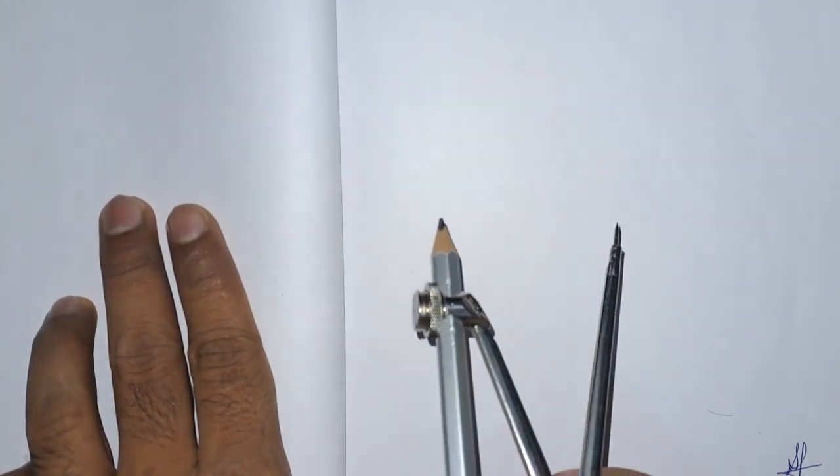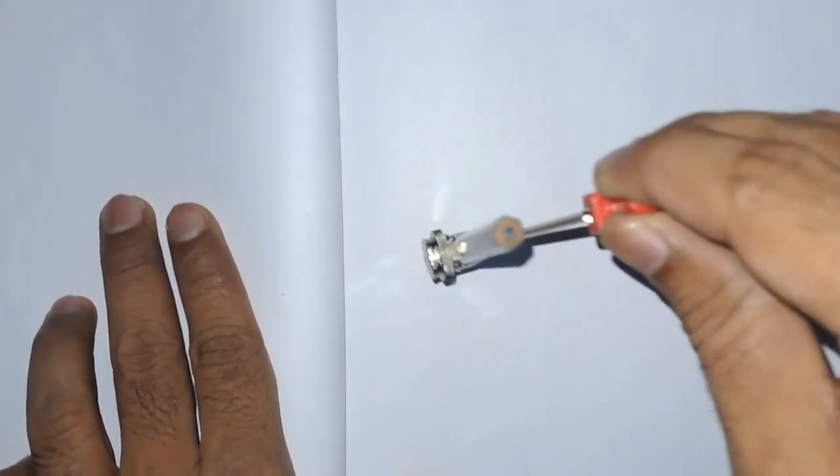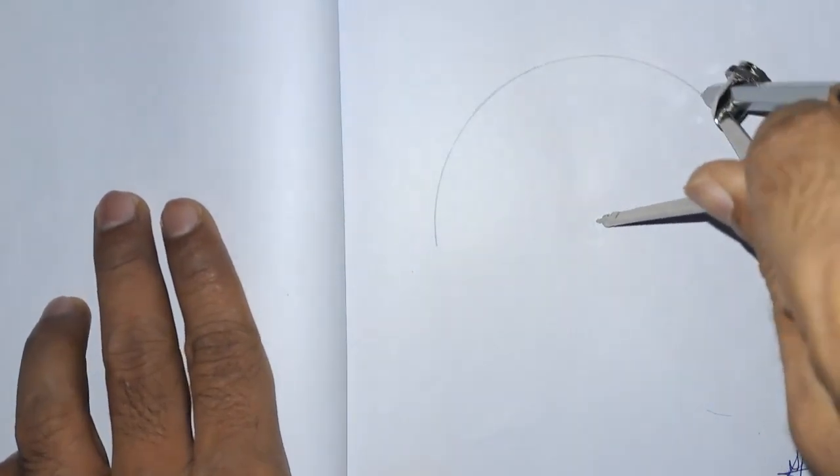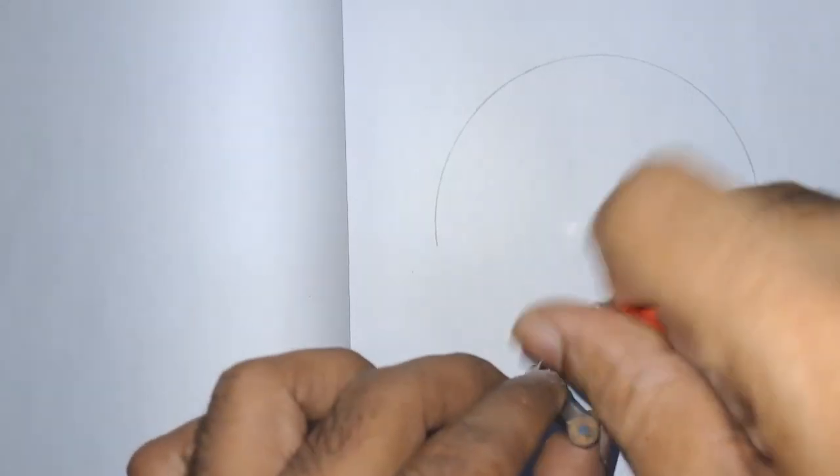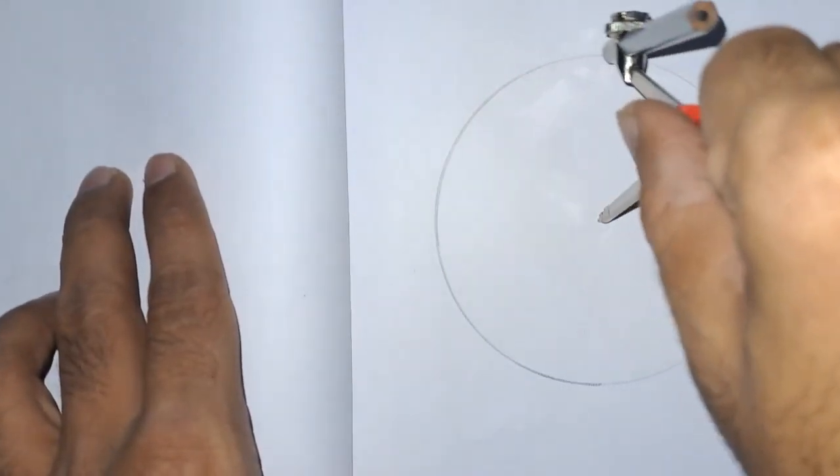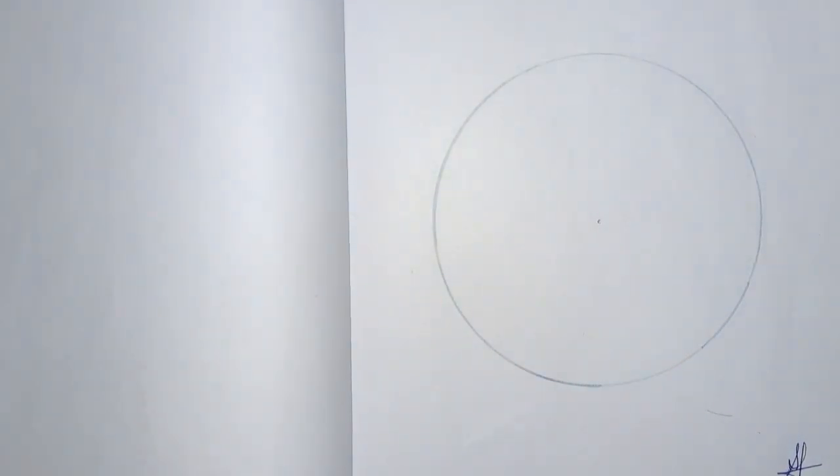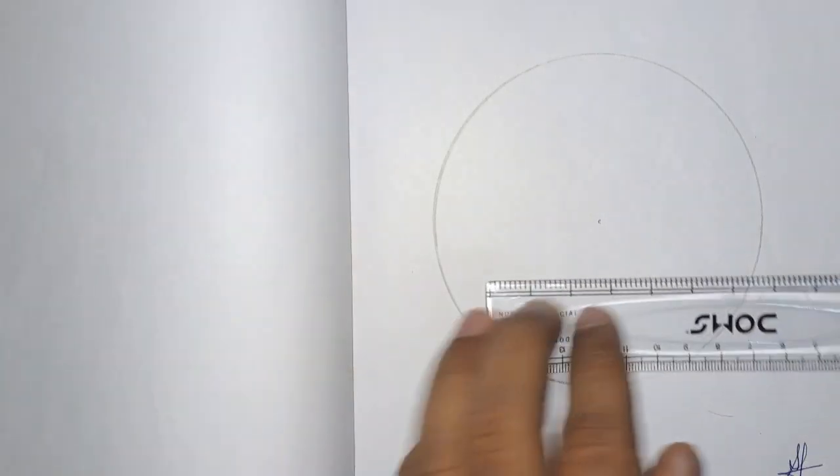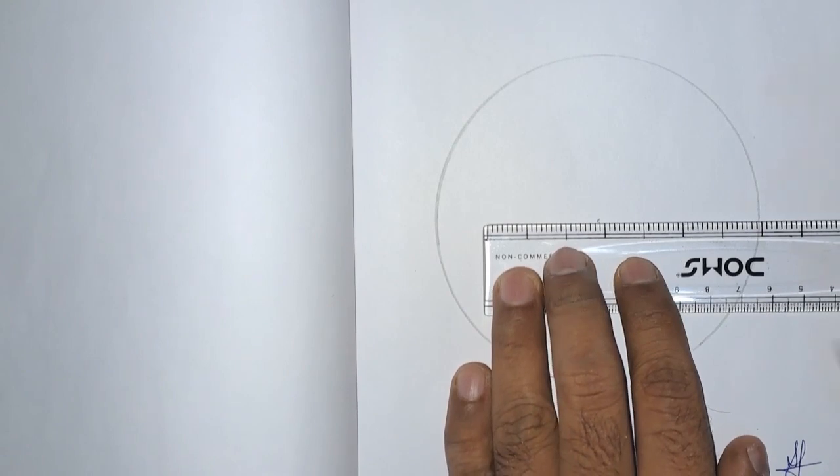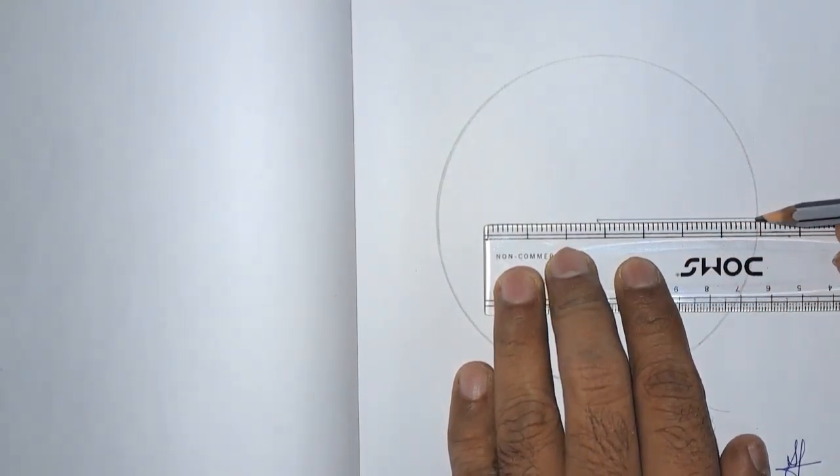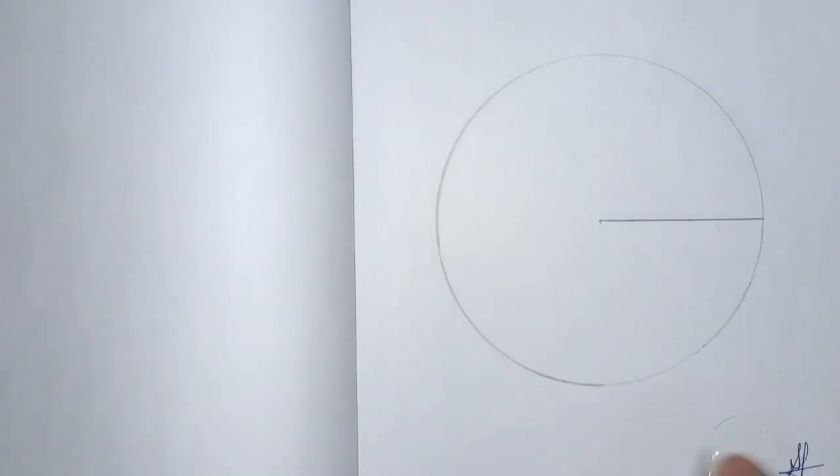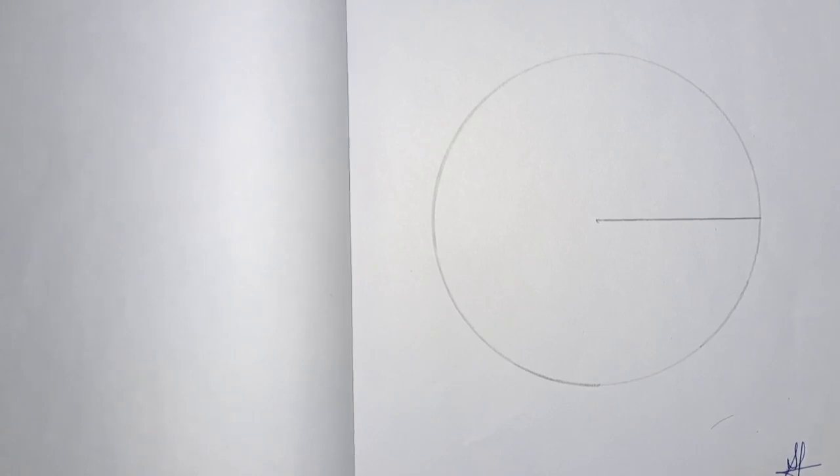Let us take some radius and draw a circle. This is a circle and this is the center. Next, we are going to draw a horizontal line. Let us draw a horizontal line here.